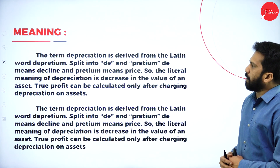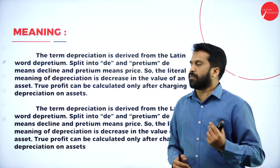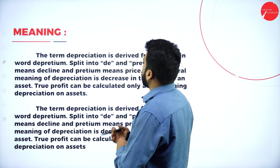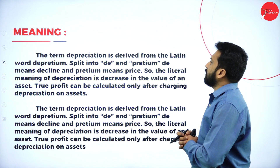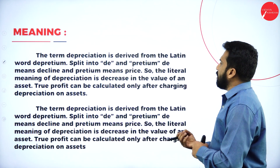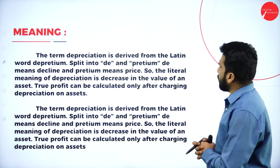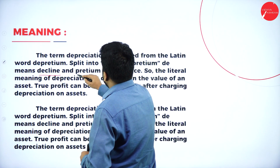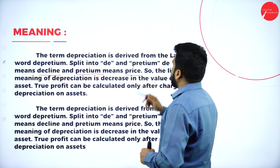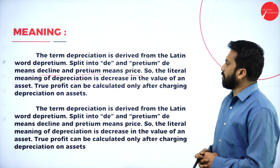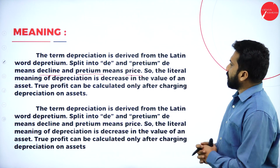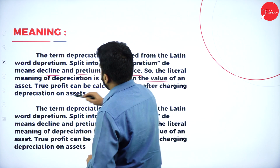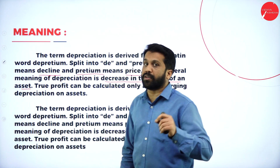The meaning of depreciation as per income tax: the term depreciation is derived from the Latin word 'deprecium,' split into 'de' and 'pretium.' De means decline and pretium means price. Decline in the price — we call it depreciation. So the literal meaning of depreciation is decrease in the value of an asset.